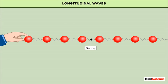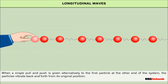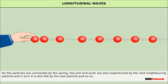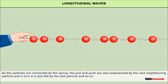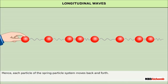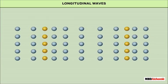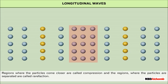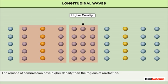Let's consider a spring-particle system fixed to one end. When a single pull and push is given alternatively to the first particle at the other end of the system, the particles vibrate back and forth from their original position. As the particles are connected by the spring, the pull and push are also experienced by the next neighboring particle and in turn by the next particle and so on. Hence, each particle of the spring-particle system moves back and forth. During the wave motion, some of the particles come close to each other while some get apart. Regions where the particles come closer are called compression and the regions where the particles are separated are called rarefaction. The regions of compression have higher density than the regions of rarefaction.